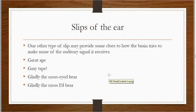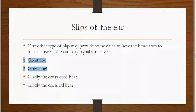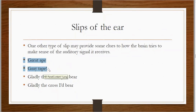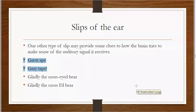Slip of the ear is not rare — many people experience it, and we may experience it ourselves. It is another type of slip that may provide clues to how the brain tries to make sense of auditory signals it receives. When we don't hear an expression clearly, the mind tries to make sense of it, which is why a word like 'gray tape' might be heard as 'great ape.'